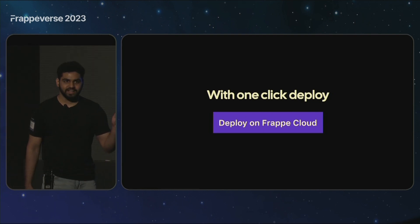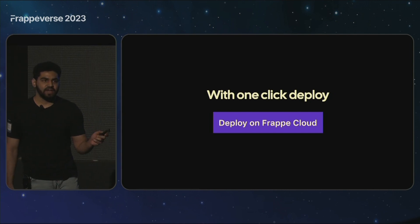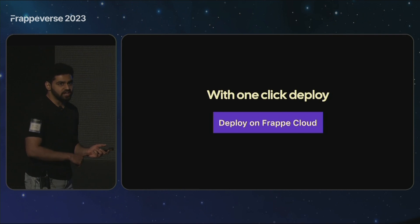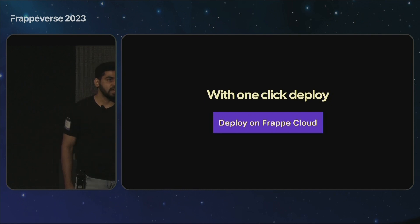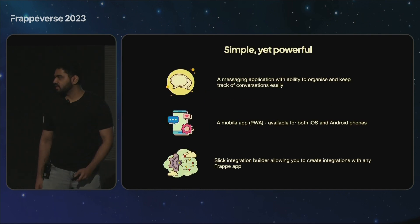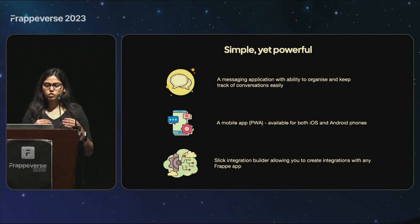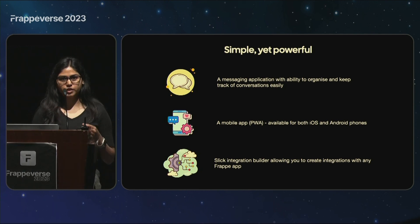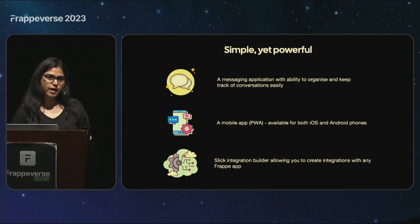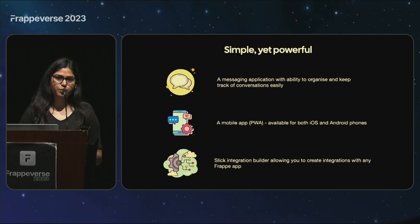With just one click, you can deploy Raven on your Frappe cloud server. And since it's a Frappe app, you can effortlessly install it on your Frappe bench, and it will ensure seamless integration with your existing setup. We also have a mobile application which is a PWA, so it works on both iOS as well as Android devices. And something exciting coming up is a slick integration builder that allows you to create integrations with other Frappe applications.